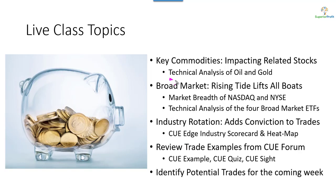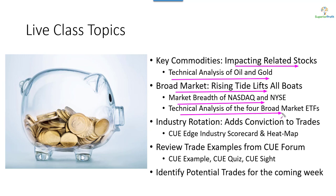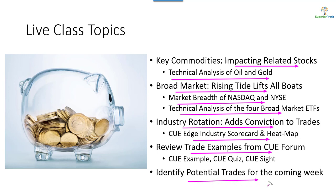In today's topics, we will look at oil and gold, these two commodities using technical charts. They tend to impact related stocks when swing trading. When swing trading stocks, we like to trade them in the direction of the market. We will analyze market direction using NASDAQ and NYSE market breadth and technical analysis of market ETFs. In addition, we like to align trades with industry strength, studying it using scorecard and heatmap. Along the way, we may look at some recent trade ideas shared in our traders forum and look at potential trades for the coming week.